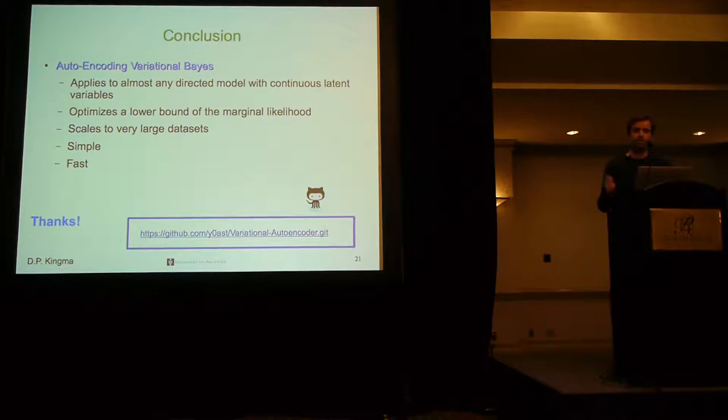I showed this method, auto-encoding variational Bayes. It applies to almost any directed model with continuous latent variables. It does optimize a lower bound of marginal likelihood, which is nice. It scales to very large data sets. It's simple and fast. And there's code available online at this address. So thank you very much.